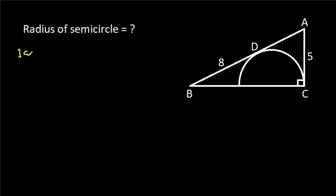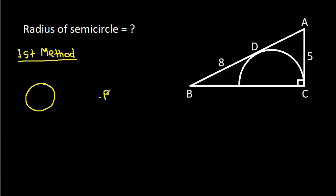The first method: in any circle, from any external point P, if we draw two tangents to the circle touching at points A and B, then PA equals PB. So here, from point A, AD will be equal to AC, and AC is 5, so AD will be 5.